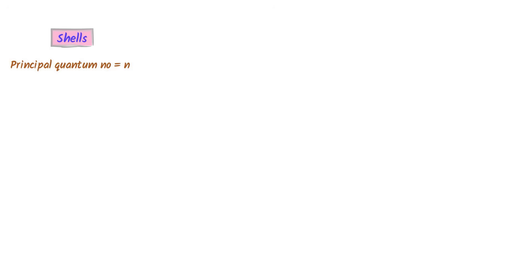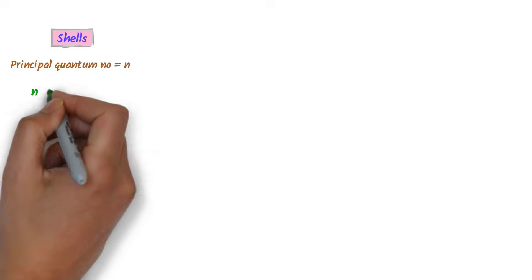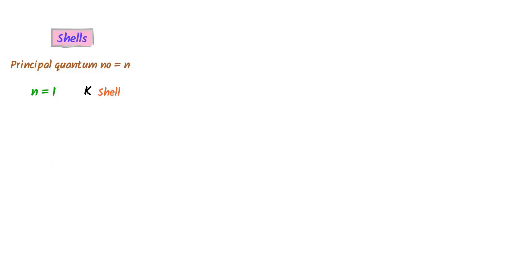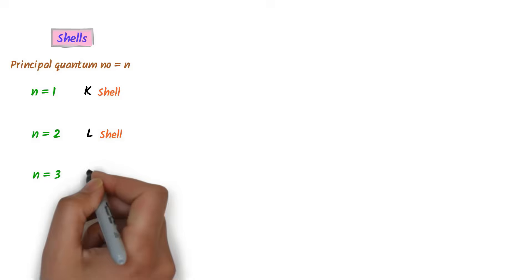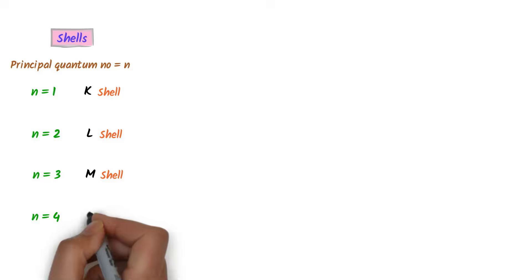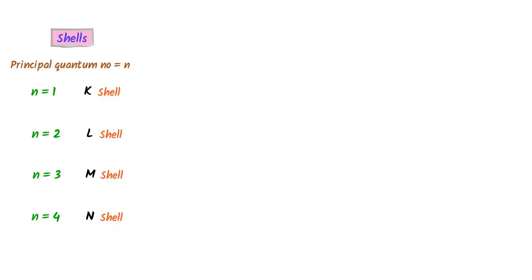What about the main shells of an atom? Main shells are represented by the principal quantum number n. When n=1, it is K shell. When n=2, it is L shell. When n=3, it is M shell. When n=4, it is N shell.